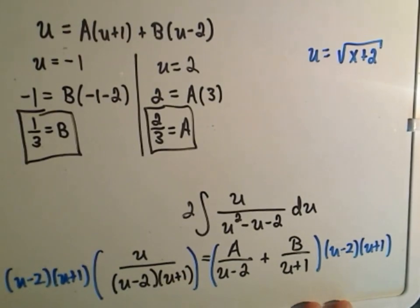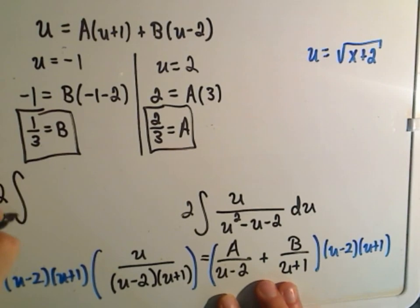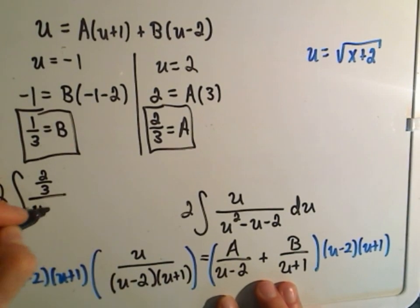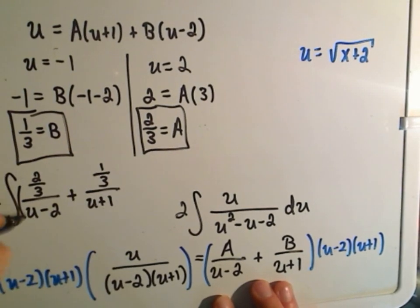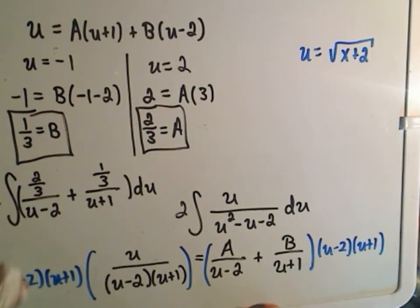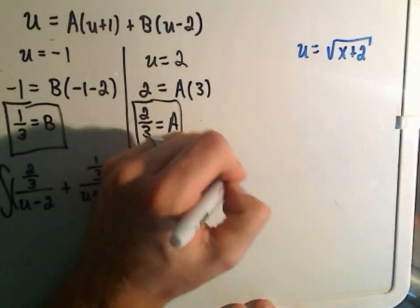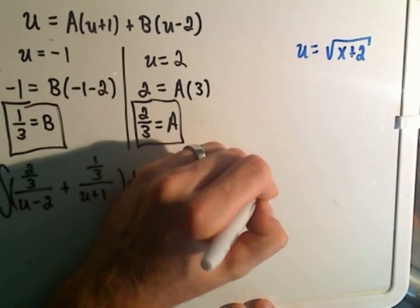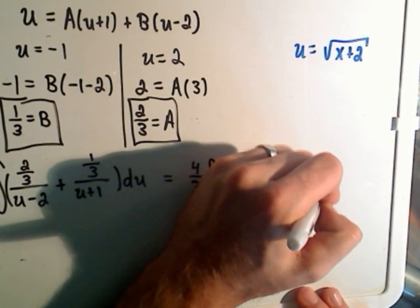So we were originally integrating this u over u squared minus u minus 2. We said you could break that fraction down into these equivalent fractions. So now we're going to rewrite our integral as 2 times the integral of A, which we figured out is 2 thirds, over u minus 2, plus B, which we found was 1 third over u plus 1 du. At this point, now all we have to do is integrate. You're just integrating these separately. So I'm going to bust up the integral. I'll get 2 times 2 thirds, which is 4 thirds, the integral of 1 over u minus 2 du. Then I'll get plus 2 thirds, the integral of 1 over u plus 1 du.